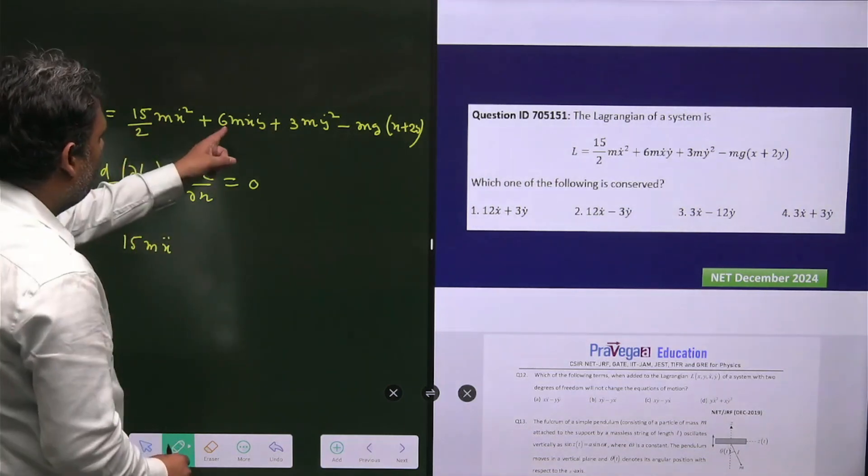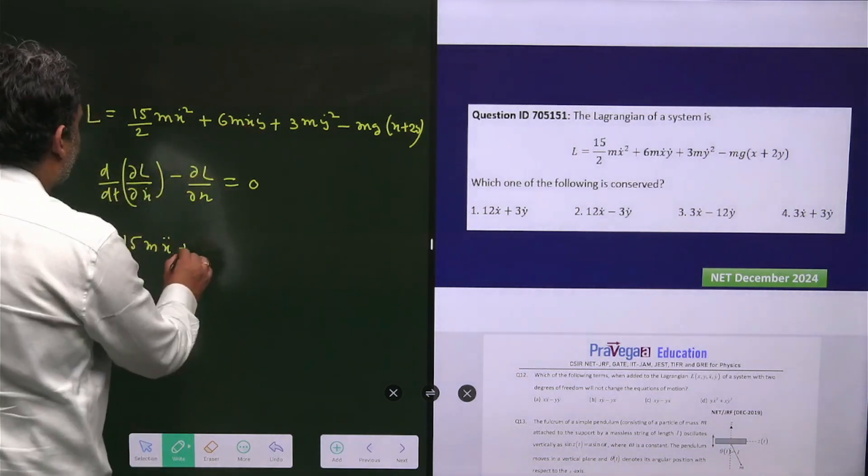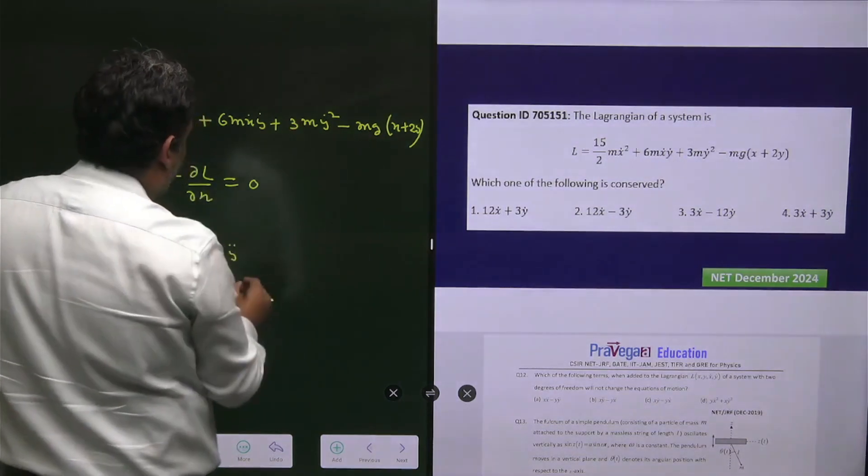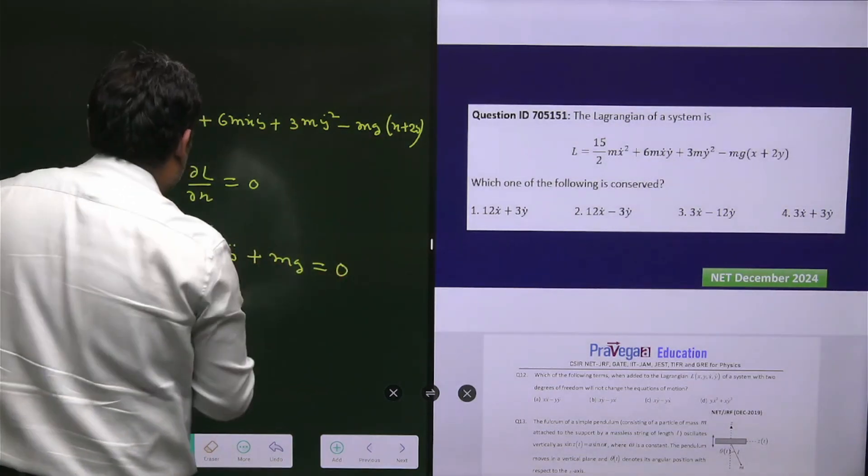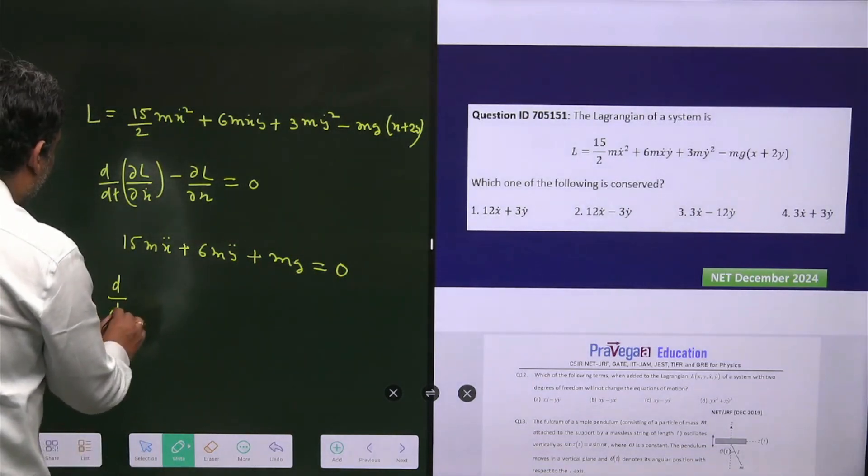When you differentiate with respect to ẋ, you have ẏ here, so you get +6mÿ. This term won't be there, and you have +mg = 0. This is your first equation.